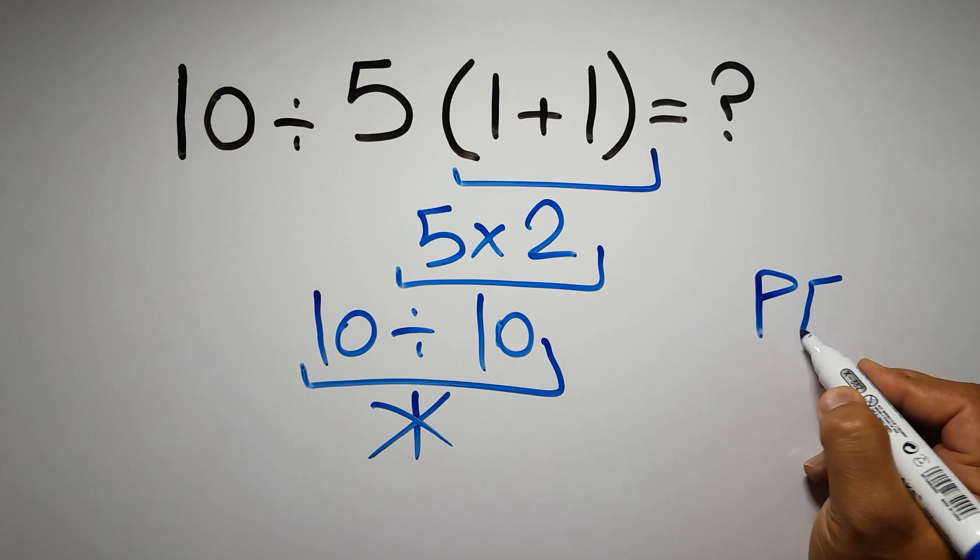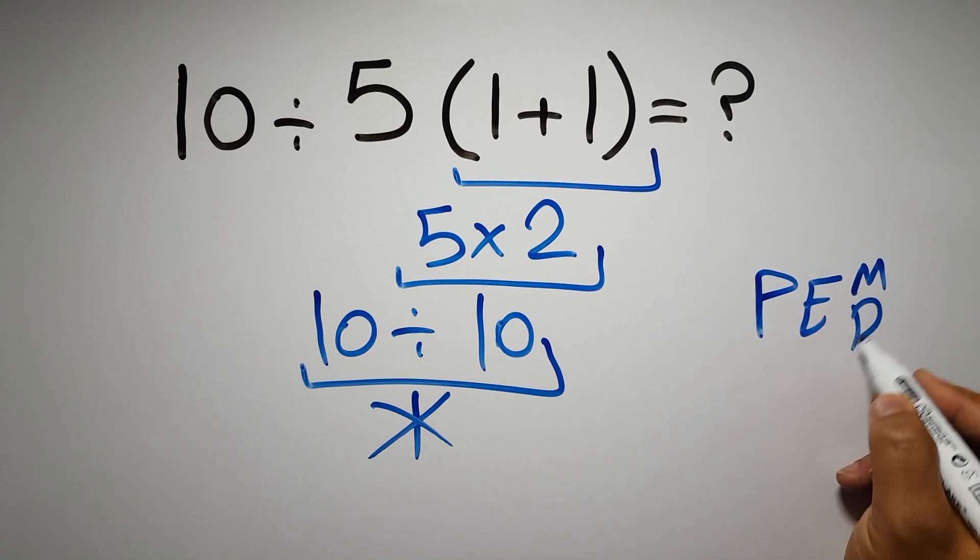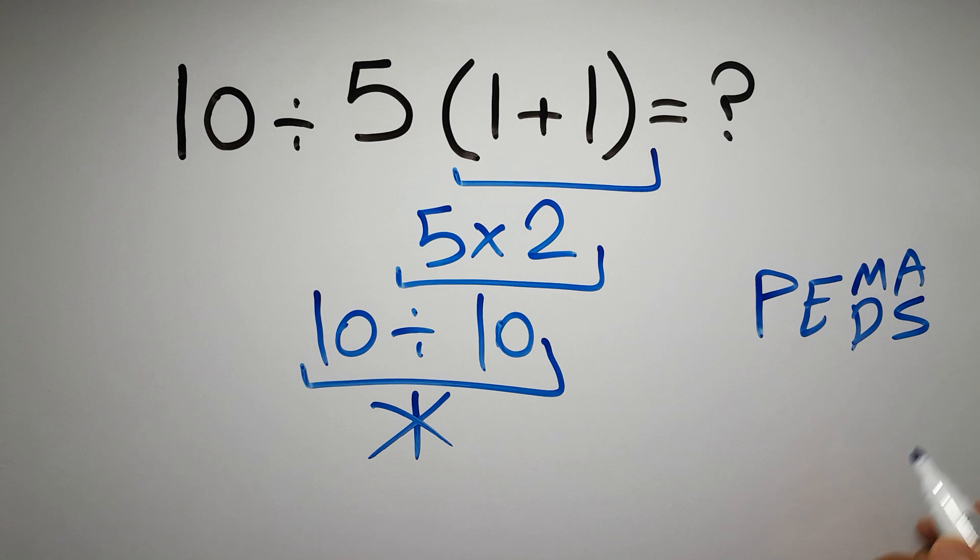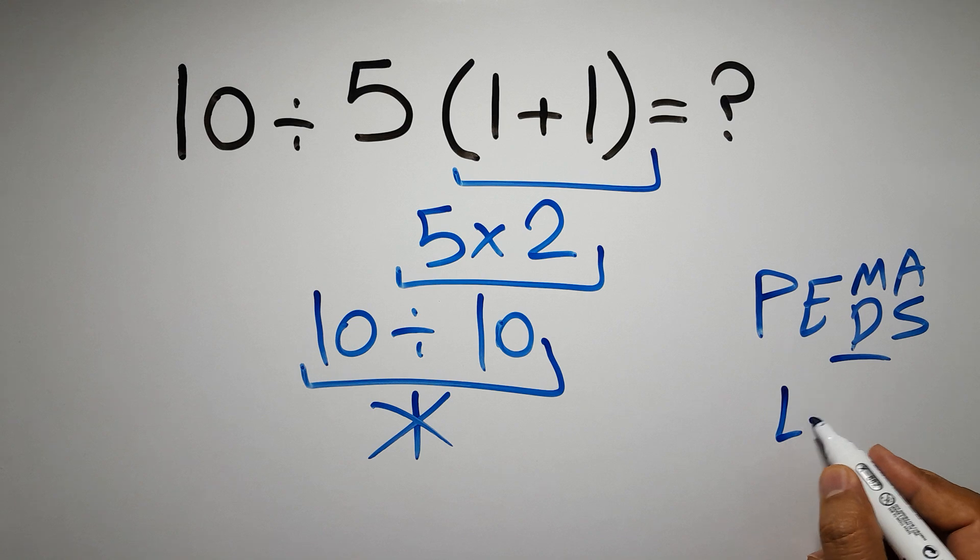First we have to do parentheses, then exponents, then multiplication or division, and finally addition or subtraction. Remember that multiplication and division have equal priority and we have to work from left to right, and the same applies to addition and subtraction.